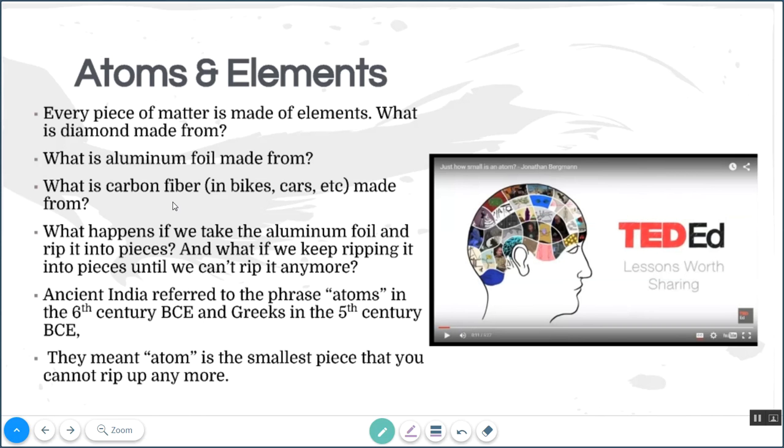Okay, now if we take a piece of aluminum foil and we rip it into two pieces, and then we rip one of those two pieces again, and we keep going ripping, ripping, ripping, eventually we're going to come to some tiny, tiny piece that we can't rip anymore. That tiny piece, the indivisible piece, is called an atom.